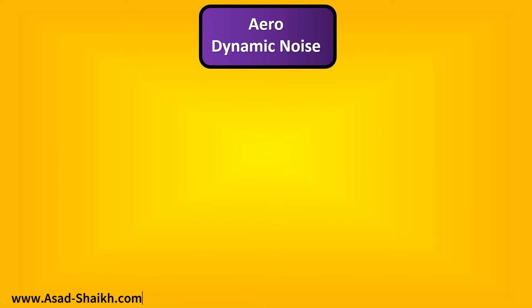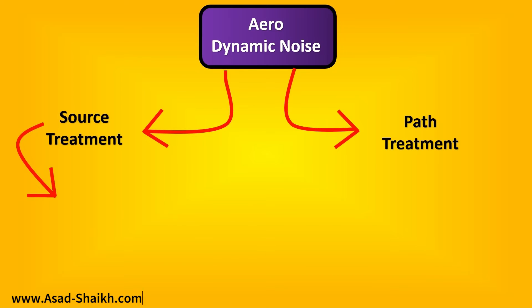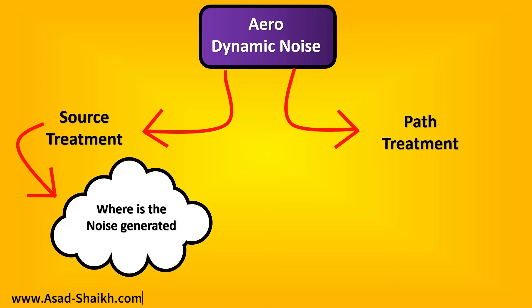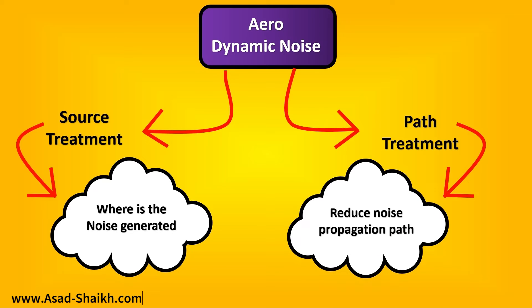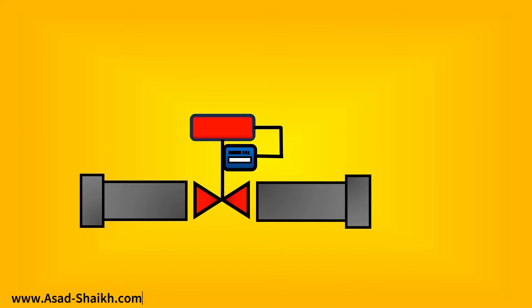Let's look into aerodynamic noise. In order to reduce aerodynamic noise, you have two important techniques: source treatment and path treatment. Source treatment basically deals with where the noise is being generated and how can I reduce it at the source itself. When it comes to path treatment, it is basically trying to reduce the noise in the noise propagation path as much as possible. Imagine here is your valve and the noise is generated inside the valve.